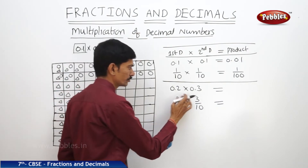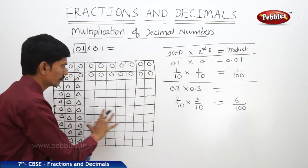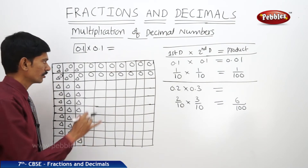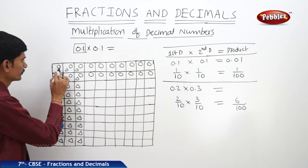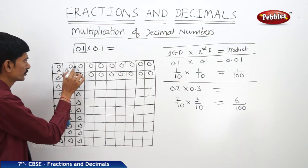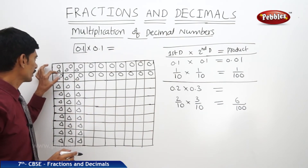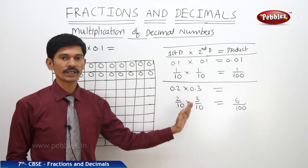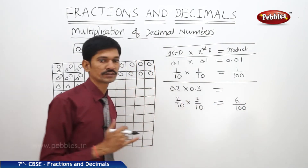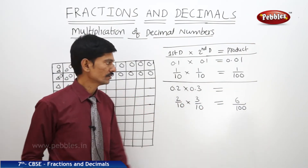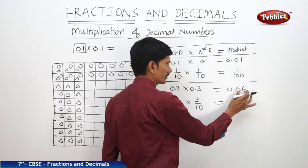Now, what is their product? This equals 2 threes are 6, by 10 tens are 100. Out of 100 equal squares, we can find that in 1, 2, 3, 4, 5, 6 squares, both circles and triangles are there — meaning 2 by 10 and 3 by 10. So, out of 100 squares, in 6 squares both shaded regions are there. That is why their product is 6 out of 100 — which can be written as 0.06. So, 6 by 100 can be written as 0.06.